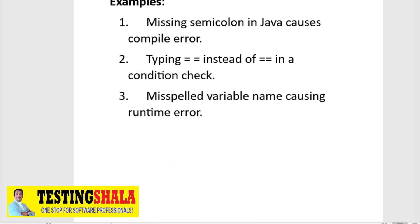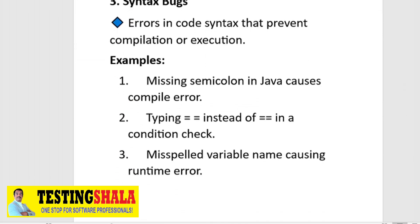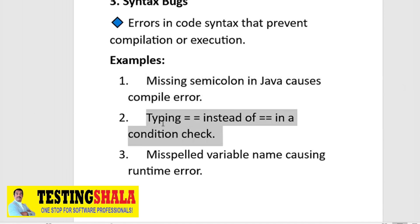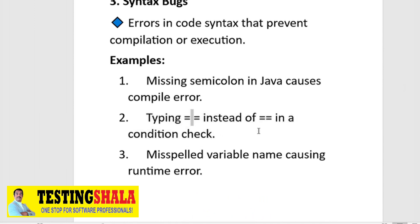The third category is syntax bugs. A syntax bug occurs when there is an error in the code syntax that prevents compilation or execution. For example, a missing semicolon in Java causes a compiler issue, typing '= =' with a space instead of '==' is also a syntax error, or a misspelled variable name causing a runtime error. These are all logged as syntax bugs.